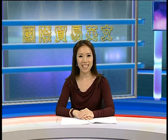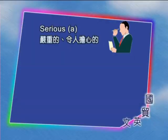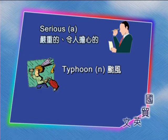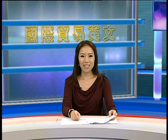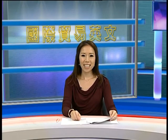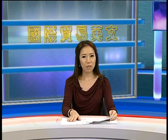我们来看一下这封信件的一些单字。Serious——严重的、令人担心的；Typhoon——台风；Direct——直接的。最后我们来看一下这封信件的中文翻译。